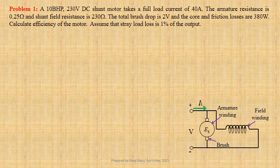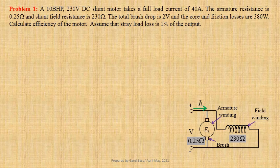Problem 1: A 10 BHP, 230V DC shunt motor takes a full load current of 40A. The armature resistance is 0.25Ω, shunt field resistance is 230Ω, total brush drop is 2V, and core and friction losses are 380W. We have to assume that stray load loss is 1% of the output and calculate the efficiency of the motor. Let us first jot down the given data.